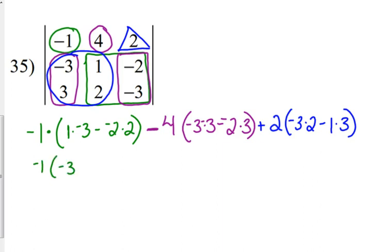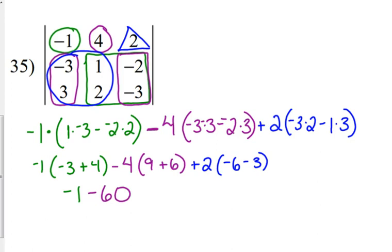And hopefully not mess anything up. So, let's see here. Negative 3 plus 4 is 1. So, that's negative 1. 9 plus 6 is 15. So, that's minus 60. Negative 6 minus 3 is negative 9. That's negative 18. So, we get negative 79.